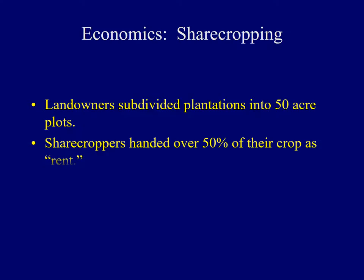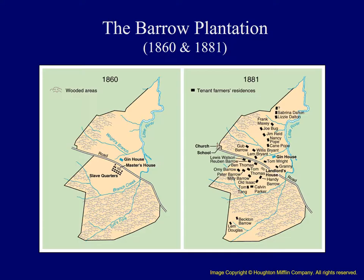This map of the Barrow Plantation from before and after the Civil War demonstrates the different land uses of a plantation. On the left, we see a large plantation including slave quarters from 1860. In 1881, we see the same plantation; however, it's subdivided into different plots for Sabrina Dalton and Lizzie Dalton in the upper right, and then we see Frank Maxey, Joe Bug, Jim Reed, Nancy Pope, and many others in those 50-acre plots on the right.